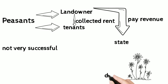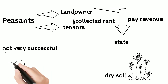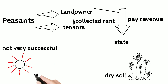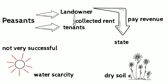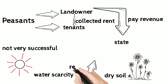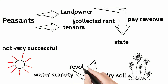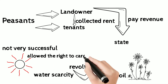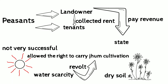There was also a problem of water scarcity. This led to a revolt, which was somewhat successful, and the tribals were allowed the right to carry on their jhum cultivation.